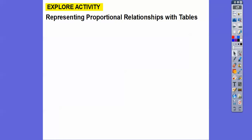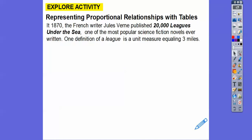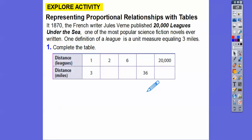Representing proportional relationships with tables. In 1870, the French writer Jules Verne published 20,000 Leagues Under the Sea, which is one of the most popular science fiction novels ever written. One definition of a league is a unit of measure that equals three miles — so every league represents three miles. Let's complete the table.